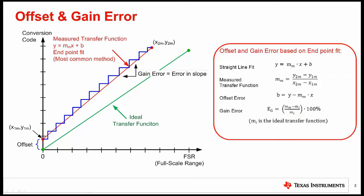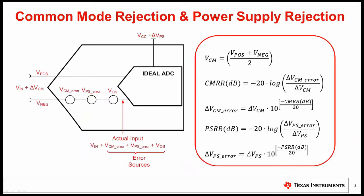Let's take a closer look at offset error. Here we introduce the concept of common mode rejection and power supply rejection. The common mode voltage is the average voltage applied to both inputs. As this input changes, it will introduce an error source that can be modeled as an offset voltage source on the ADC input VCM error.